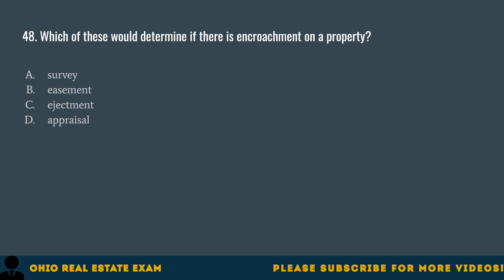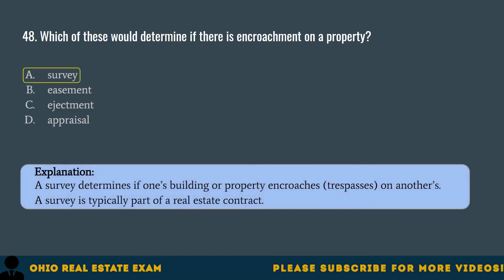Question 48. Which of these would determine if there is encroachment on a property? A. Survey. B. Easement. C. Ejectment. D. Appraisal. The correct answer is A. Survey. A survey determines if one's building or property encroaches — trespasses — on another's. A survey is typically part of a real estate contract.